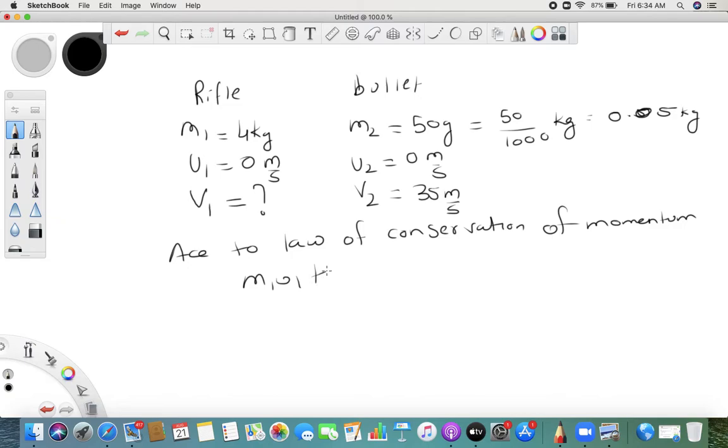m1u1 plus m2u2 equals m1v1 plus m2v2. So it is 4 times 0 plus 0.05 times 0 equals m1 is 4 times v1 plus 0.05 times 35.